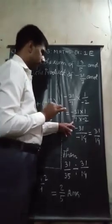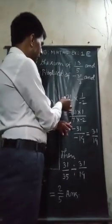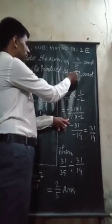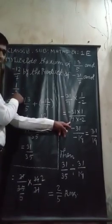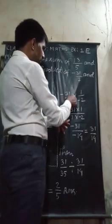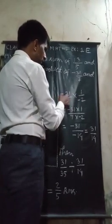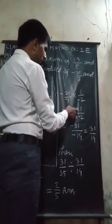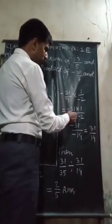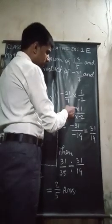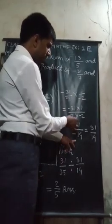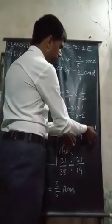In the next part of the solution, minus 31 upon 7 into 1 upon minus 2. We have to get the product of minus 31 upon 7 and 1 upon minus 2. Minus 31 multiply by 1 equals minus 31, and 7 multiply by minus 2 equals minus 14. Then minus and minus will be cancelled. It will be 31 upon 14.